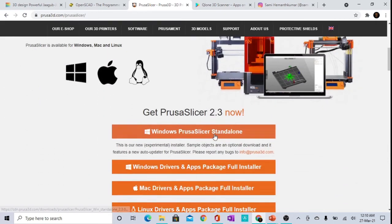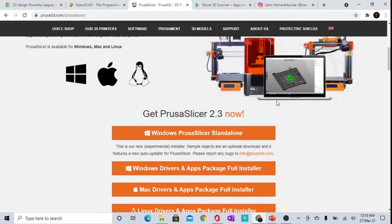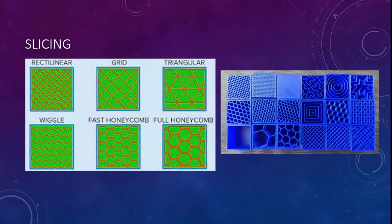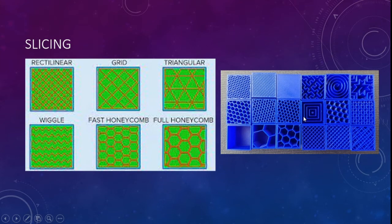As I said, slicing defines different methods for the internal pattern of an object. The slicer is a tool used to design the inside infill pattern of the object. Patterns available include rectilinear, triangular, honeycomb, fast honeycomb, and wiggle, among others. Choosing the right infill pattern is crucial — it directly determines the product cost during production.